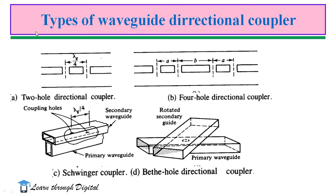Figure A represents the two-hole directional coupler, where two holes are provided between the primary and secondary waveguides, placed apart by λg/4. In figure B, four holes are provided between the two waveguides. The third type is the Schwinger coupler, where two waveguides are arranged perpendicular to each other. The fourth type is the Bethe-hole directional coupler, which has a single common hole or opening.